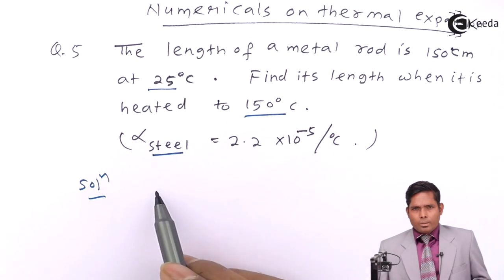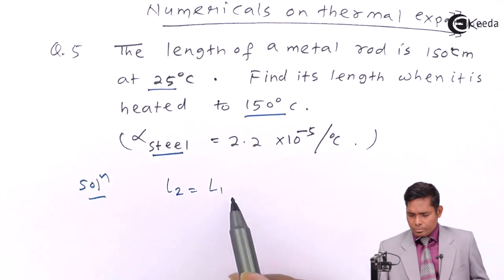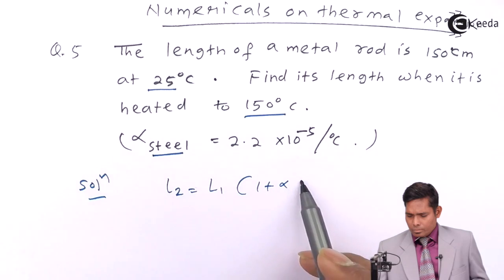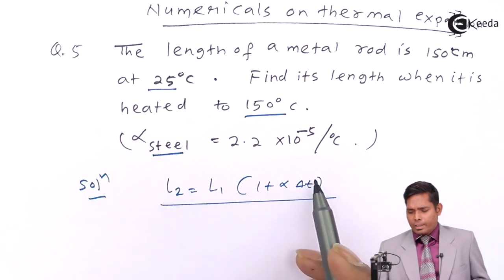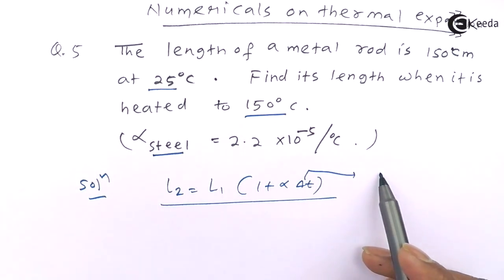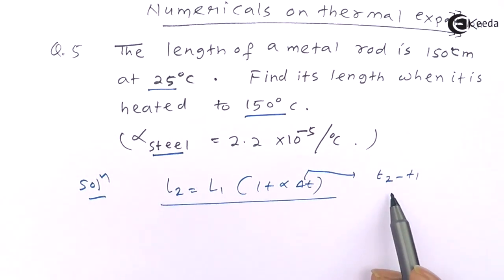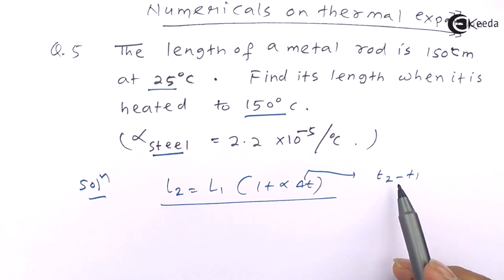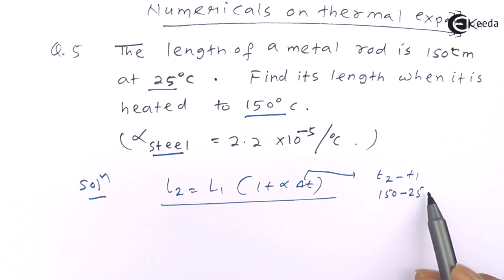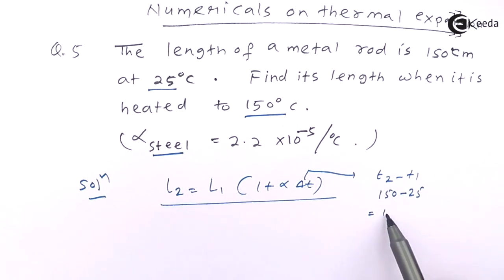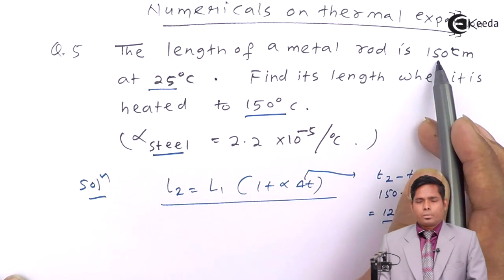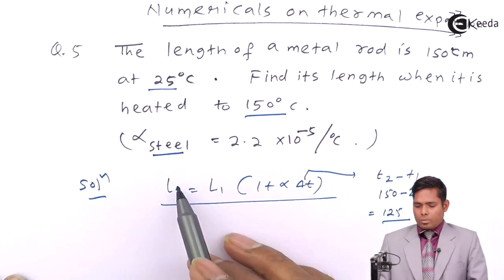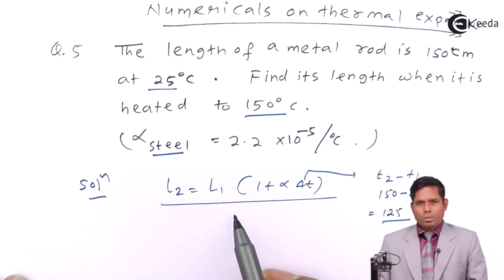That's what we can use. So I write the formula. Here ΔT stands for the change in temperature. This is 150 minus 25, that is 125. L1 is the initial length of the rod, which is 150. So L2 can be found — just need to plug in the values and get the answer.